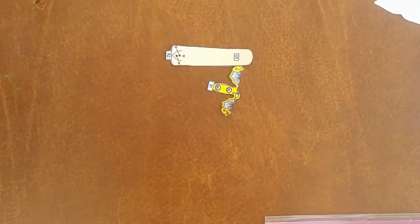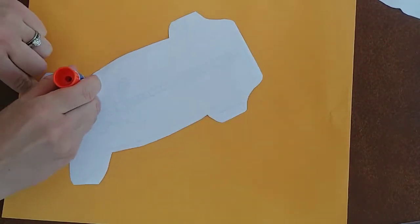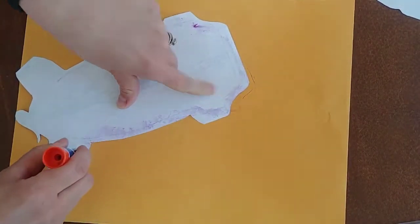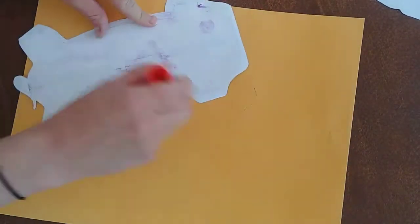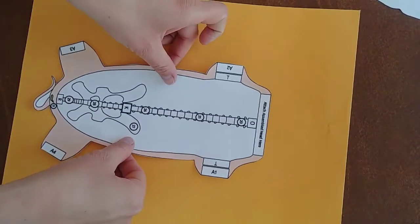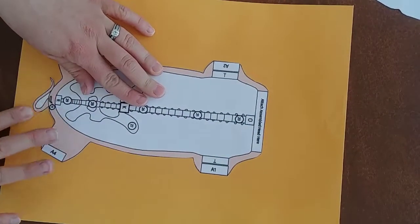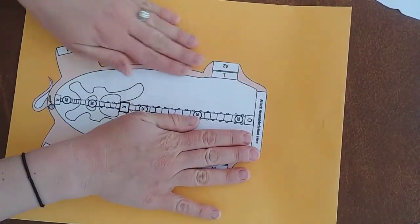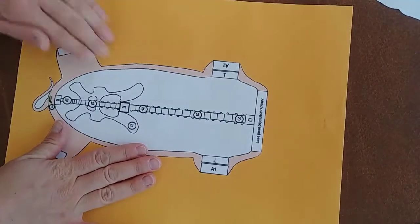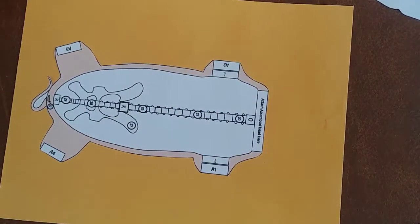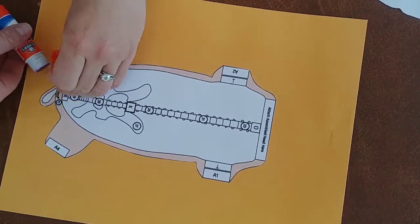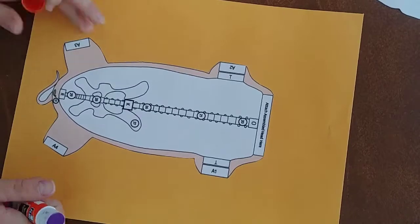So to begin, step number one is you're going to glue the base to your piece of construction paper, and everything we're going to do is going to attach to this. Once I glue it on here, the head will eventually be up here, so I'm going to leave a little bit of room for that. And I don't want my tail to get damaged, so I'm going to make sure that gets glued down well.